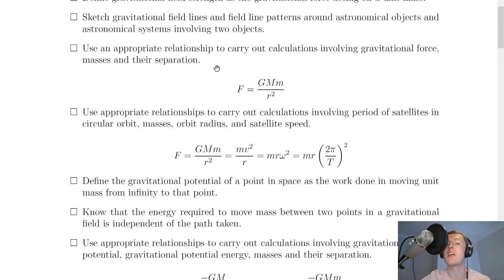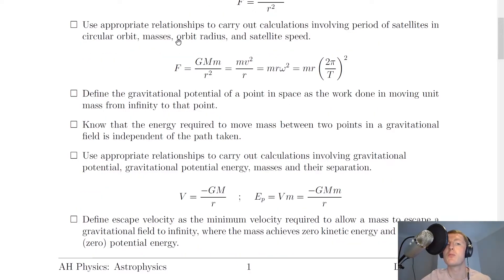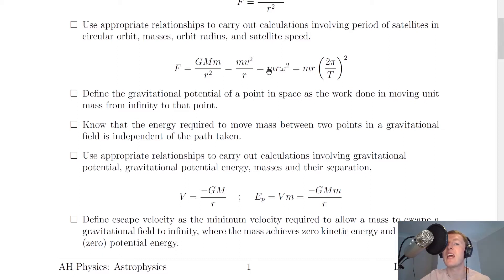You need to use appropriate relationships for calculations involving gravitational force, masses and their separation. This is Newton's law of universal gravitation: F equals GMM over R squared. For satellite motion, we can use F equals GMM over R squared equals MV squared over R, i.e. gravitational force equals centripetal force. Centripetal force can also be written as F equals MR omega squared, or MR times (2 pi over T) squared, since omega equals 2 pi over T.